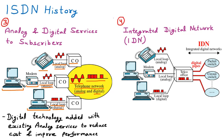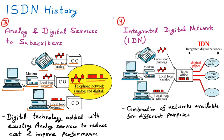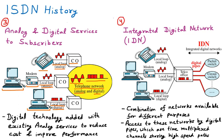IDN — Integrated Digital Network — is somewhat different from ISDN. IDN is a combination of networks made available for different purposes. The customer has the option to choose which network they want. For example, sometimes we use packet switch networks, sometimes circuit switch, based on requirement. Access to these networks is through digital pipes, which are time-multiplexed channels sharing very high speeds.